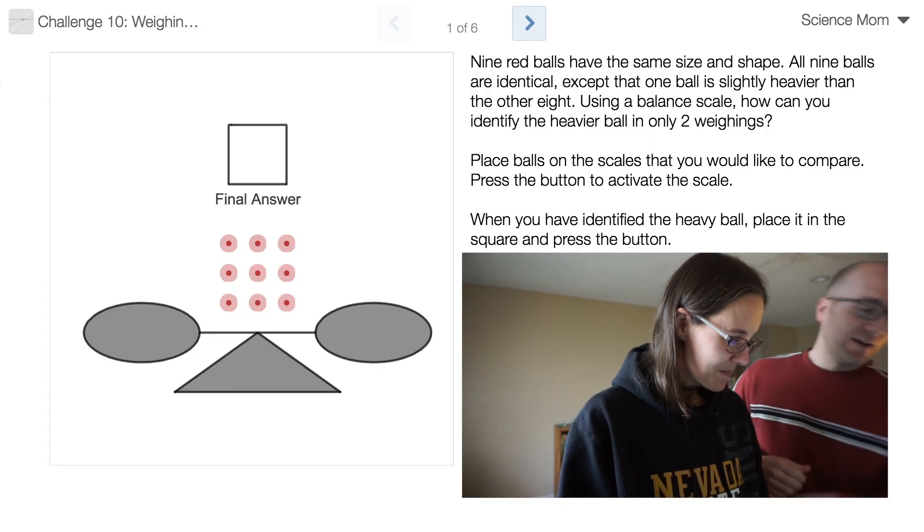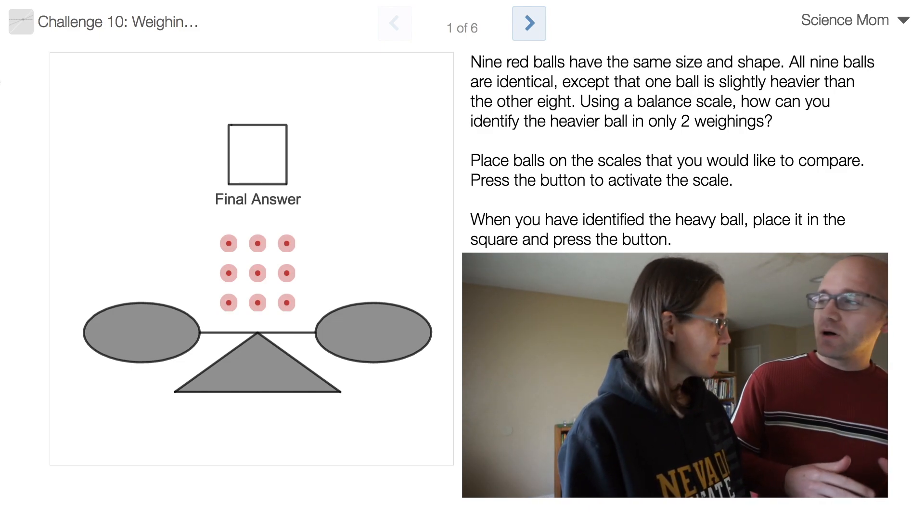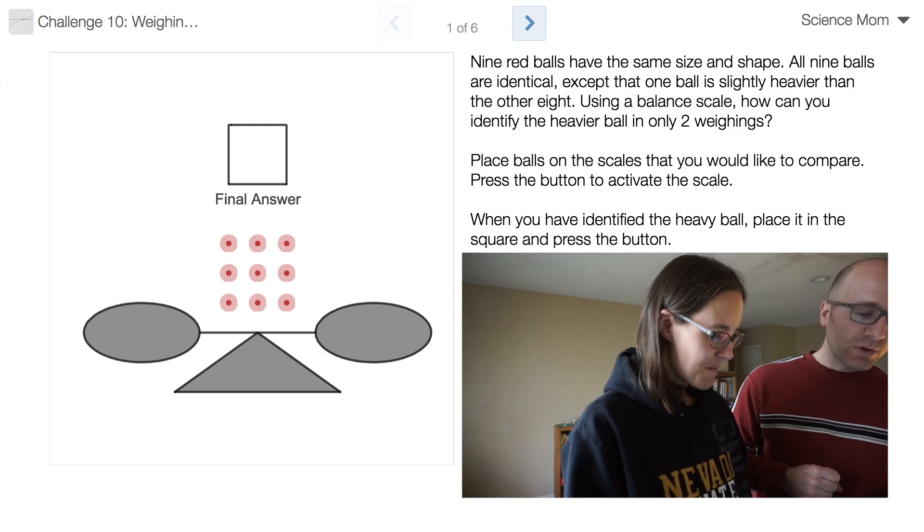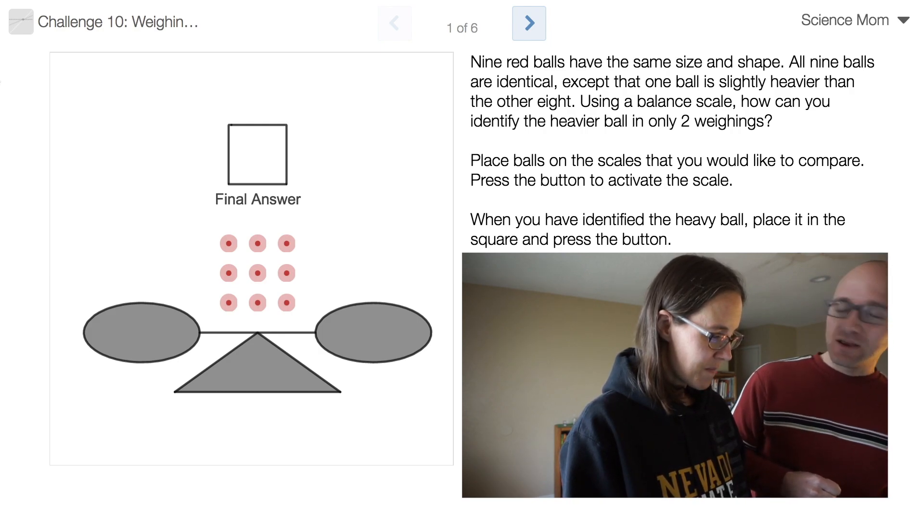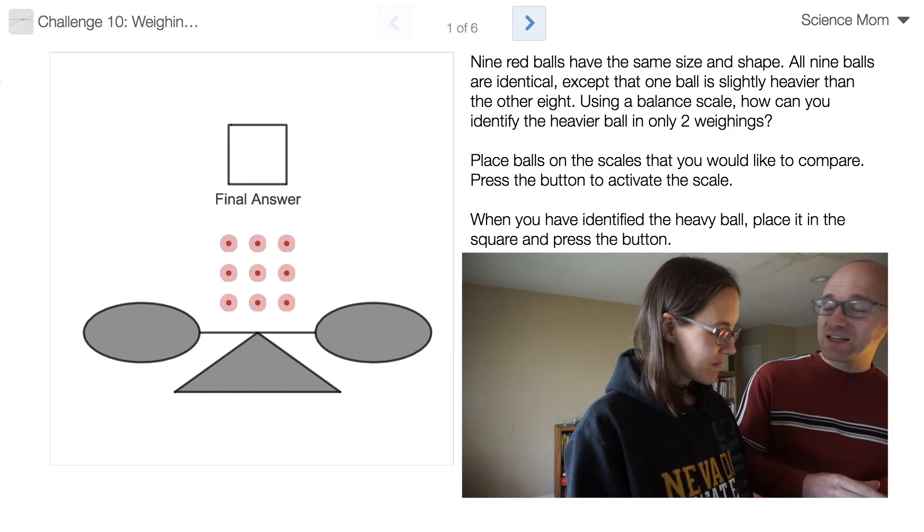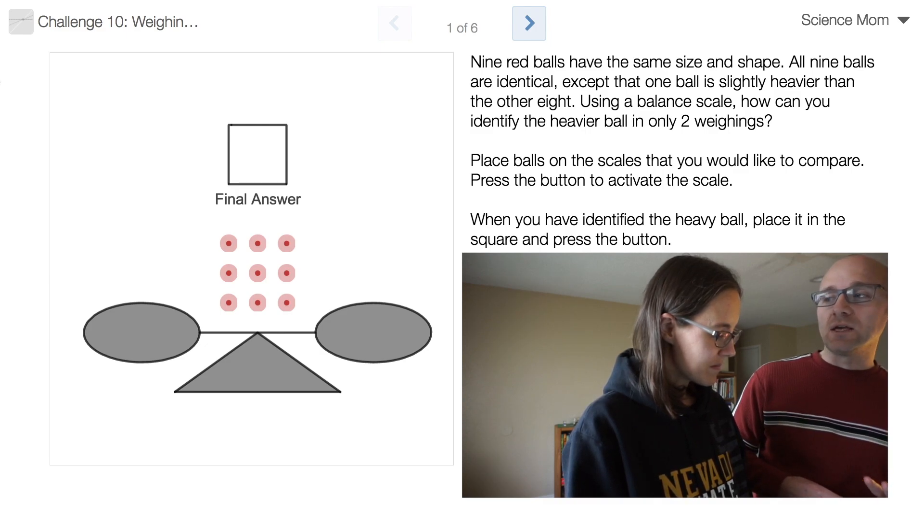In this problem we have a balancing scale and we have nine balls that appear to be identical. However, one of these balls is slightly heavier than all of the others. Your challenge is to figure out how to identify the heavy ball in only two weighings.